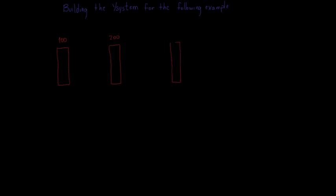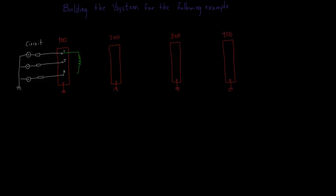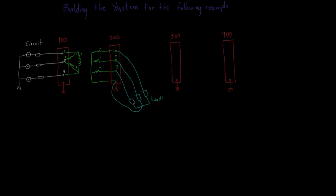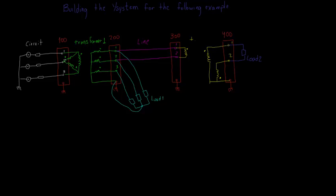In order to answer this question, let's consider the following system. It has four buses, named as 100, 200, 300, and 400. The circuit element is connected to bus 100. Between buses 100 and 200, there is a delta-Y three-phase transformer called transformer 1, and there is a three-phase load called load 1 connected to bus 200. Note that both the second terminal of the transformer and the three-phase load are grounded through node 0 of bus 200. There is a two-phase line connected between buses 200 and 300, a center-tapped transformer called transformer 2 between buses 300 and 400, and finally two loads connected to bus 400: load 3, that is a single-phase load, and load 2, that is a two-phase load.